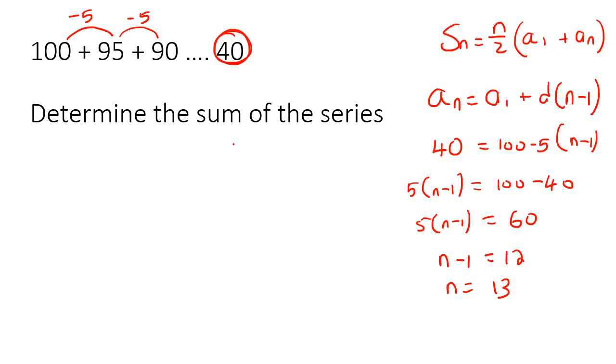Now we can use this formula. So the sum of all 13 terms is going to be 13 over 2. A1 is 100. And then the last term is 40. Go ahead, type that all in. And you end up with 910. So if you had to go add up all of these numbers together, you would get 910.